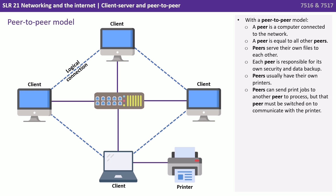With a peer-to-peer model, a peer is a computer connected to the network. A peer is equal to all other peers. Peers serve their own files to each other, and each peer is responsible for its own security and data backup.